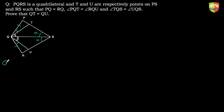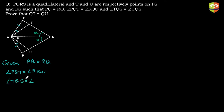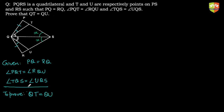Now let's solve it formally. First, as customary, we write what is given. Given: PQ equals RQ. Also, angle PQT equals angle RQU, and angle TQS equals angle UQS. What do we need to prove? We need to prove that QT equals QU.